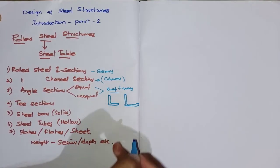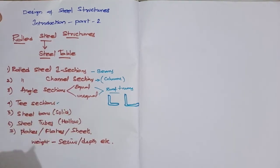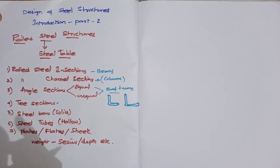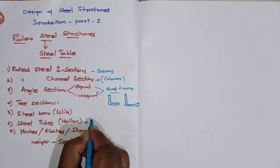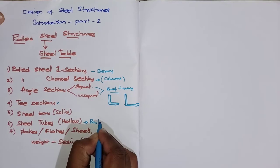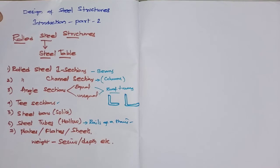Equal angle means both legs are the same size, while unequal angle means one leg is longer and the other is shorter. T-sections are generally used at junctions. Steel bars are solid, similar to reinforcement bars. Hollow steel tubes are generally used for the rails of staircases. Flats, plates, and sheets are also available.